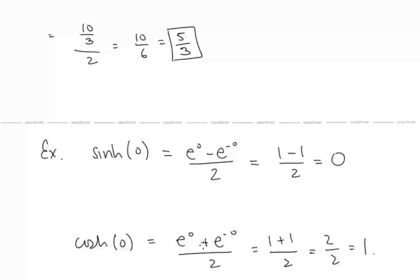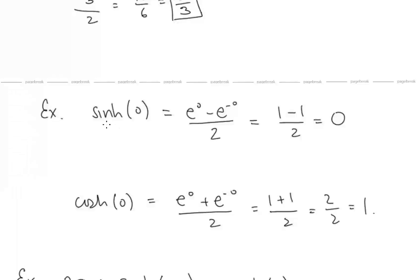Let's evaluate sinh and cosh at 0. Sinh(0) = (e⁰ − e⁻⁰)/2 = (1 − 1)/2 = 0 — just like sin(0) = 0, hyperbolic sinh(0) is also 0. For cosh(0): (e⁰ + e⁻⁰)/2 = (1 + 1)/2 = 1 — just like cos(0) = 1, hyperbolic cosh(0) = 1.